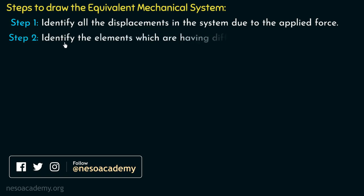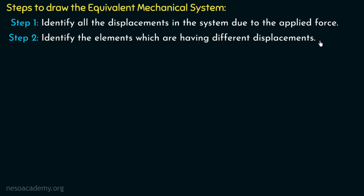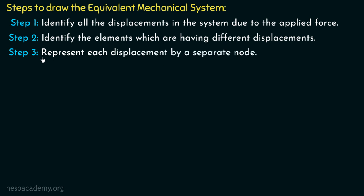In step number two, we have to identify the elements which are having different displacements. There are certain mechanical systems in which the number of displacements is more than one, so we have to identify the elements having different displacements. In step number three, we have to represent each displacement by a separate node.